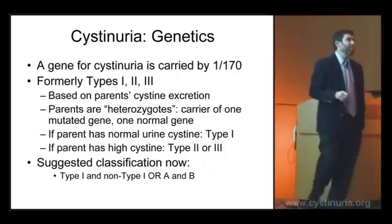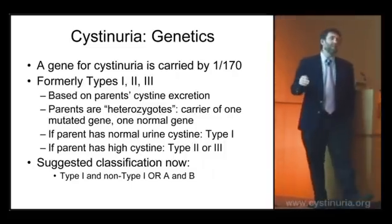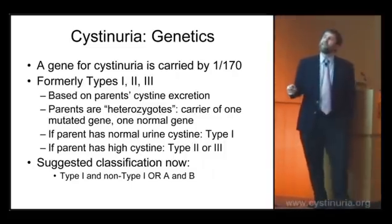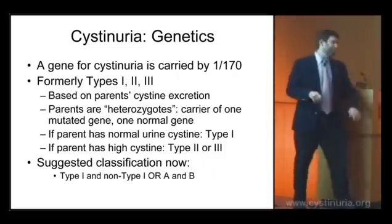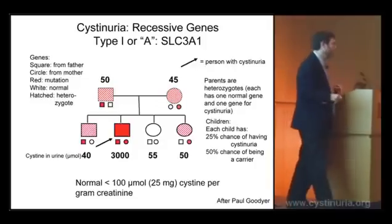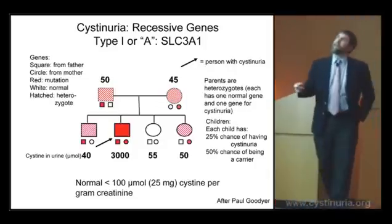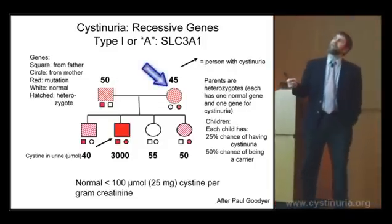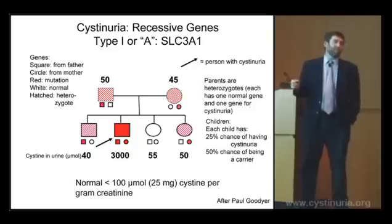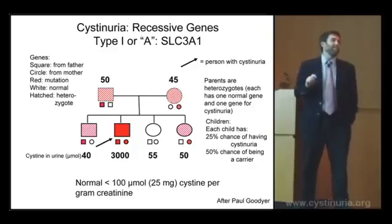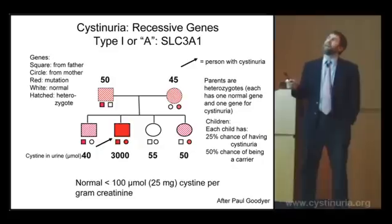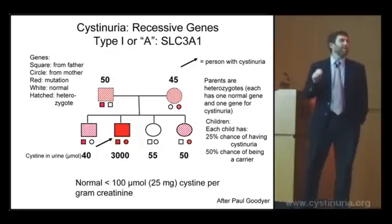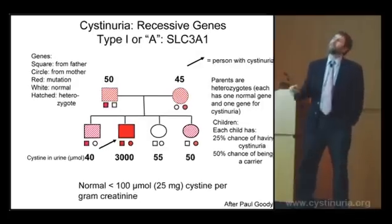Different researchers have used different classifications. The point is, let's call it A and B for now. Cystinuria type 1 or type A, which is the more common presentation in the United States, is an abnormality in SLC3A1 — the RBAT protein.